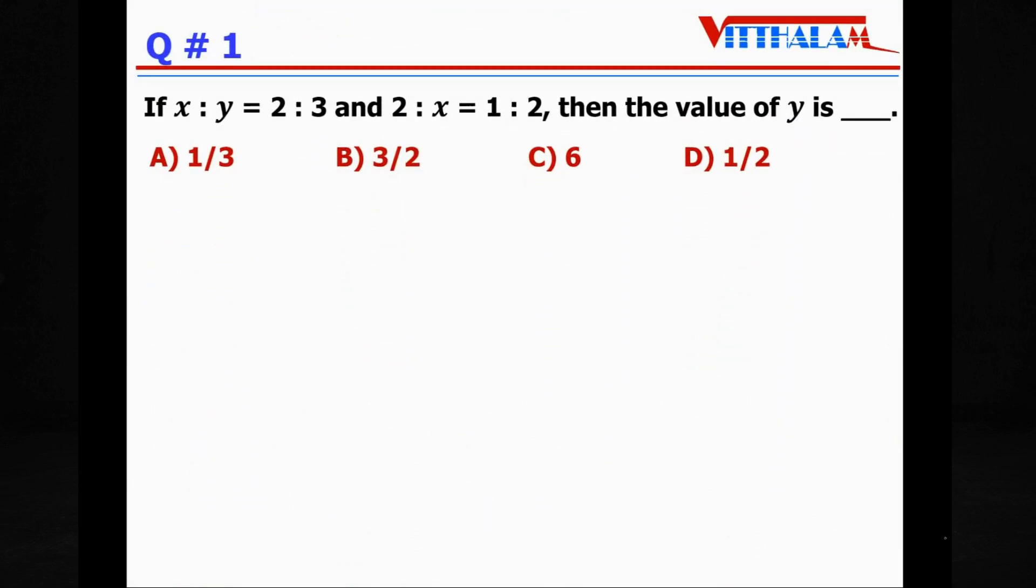If x:y = 2:3 and 2:x = 1:2, then the value of y is? So x:y = 2:3, that means x/y = 2/3. And same way, 2:x is 2/x = 1/2. Let's do cross multiplication, so x = 4. Place the value of x here: 4/y = 2/3. Let's do cross multiplication. So 2y = 12, therefore y = 6. Answer is C.